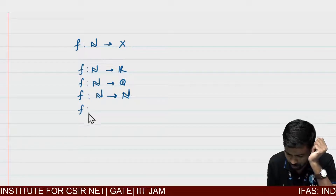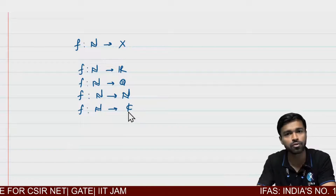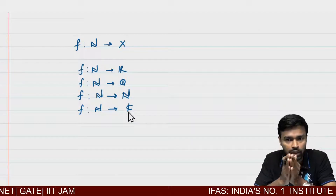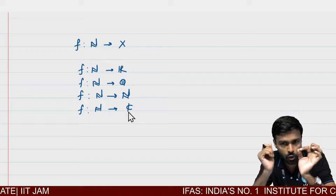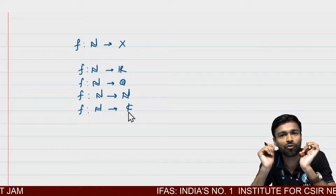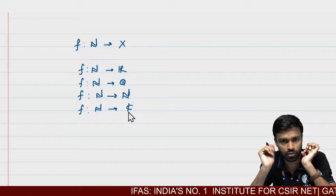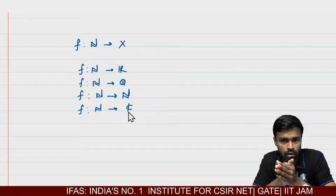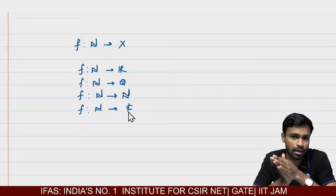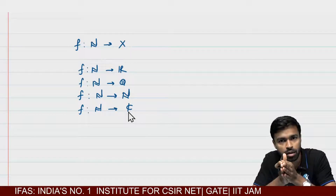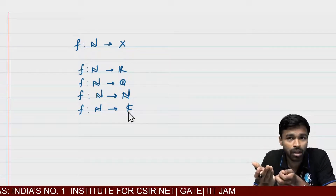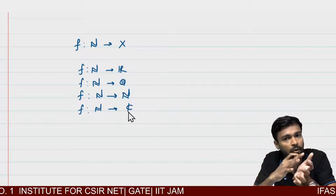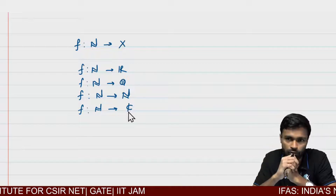If it is a function from N to Q, it will be a sequence of rationals. If I am defining from N to N, it will be a sequence of natural numbers — or sequence of integers, sequence of whole numbers. So it depends on its co-domain. You can also define a sequence from N to C, that is a sequence of complex numbers. So a sequence is a function having its domain fixed as the set of natural numbers, and its co-domain may be real, rational, irrational, whole, natural, or complex numbers.